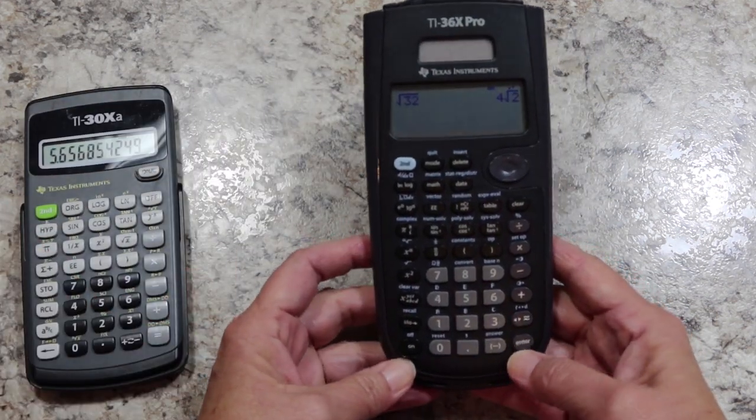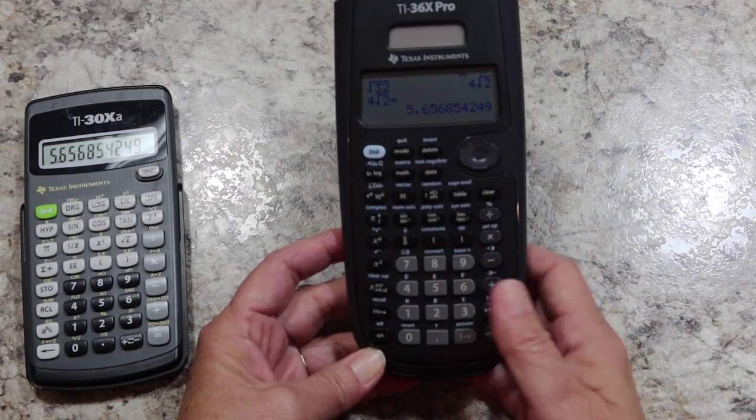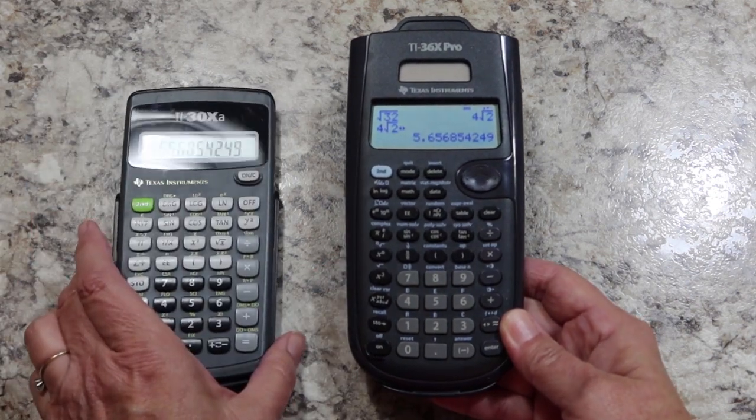this number is not going to help me very much. Now, if I need the decimal approximation, I can hit the approximate button and then I get the 5.656 just like on this one.